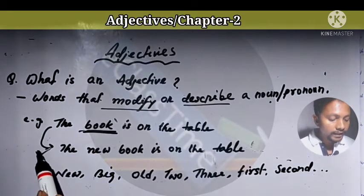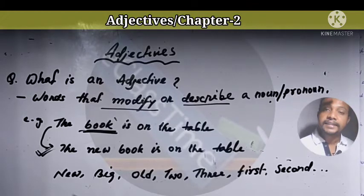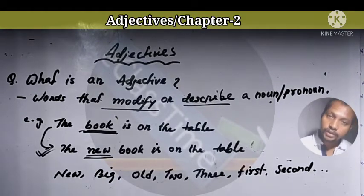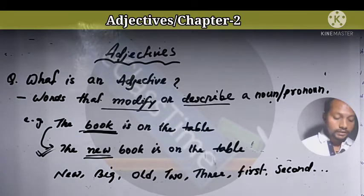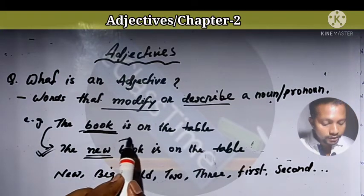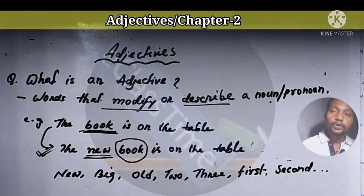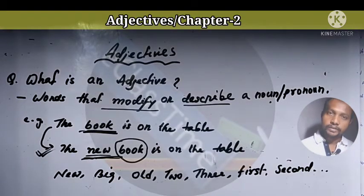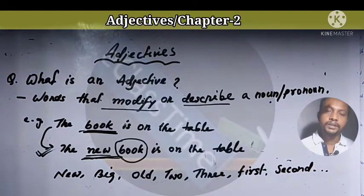Next sentence, we say the new book is on the table. The new book is on the table. Now we know that the book is new. We know the quality of the noun because of this word 'new.' If we say there is a mango, you won't know much. But if we say there is a ripe mango, then you know more about it.